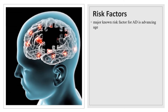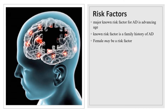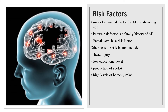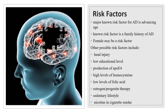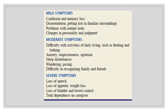The major known risk factor for Alzheimer's disease is advancing age. The age of onset is 65 years or older, and after 65 years the risk increases exponentially. The only other known risk factor is a family history of Alzheimer's disease. Being female may also be a risk factor; however, the higher incidence in women may occur simply because women generally live longer than men. Other possible risk factors include head injury, low educational level, production of apolipoprotein E4, high levels of homocysteine, low levels of folic acid, estrogen and progestin therapy, sedentary lifestyle, and nicotine in cigarette smoke.